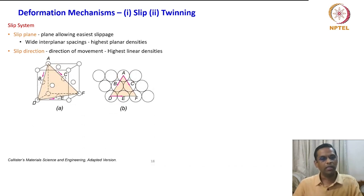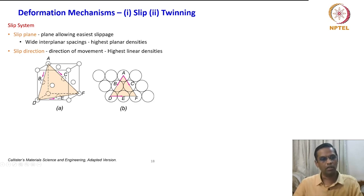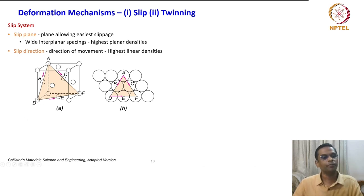Let us look at the example of the highest dense plane. Here we have taken the face-centered cubic crystal unit cell, and what you are seeing here is the {111} plane, which is also called the octahedral plane as seen in the previous lecture.